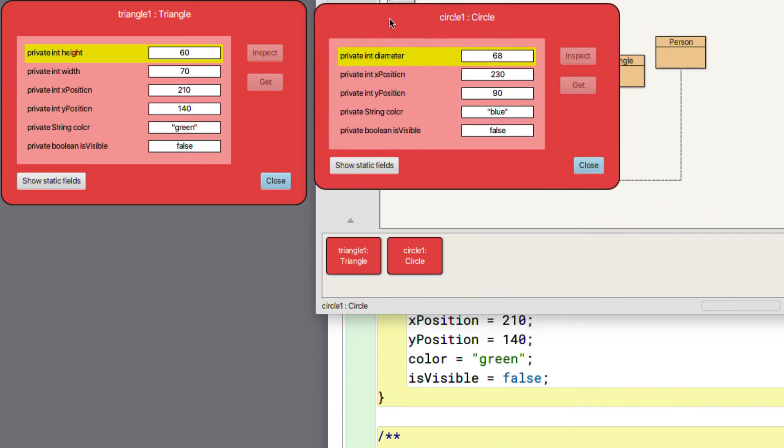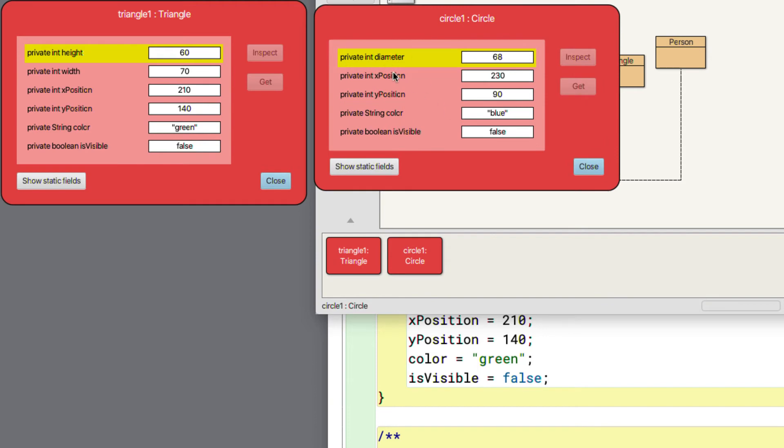We'll bring up the inspector for a circle. And if we put it side by side for comparison we'll see that although it has x position, y position, color and is visible, which are four of the data values we saw inside the triangle,